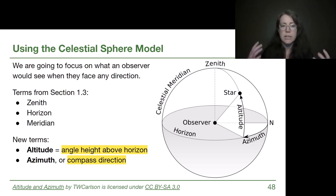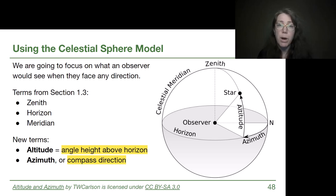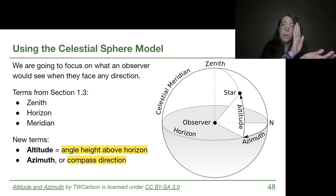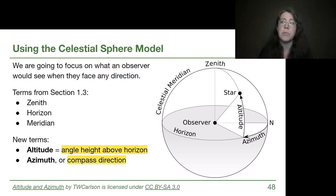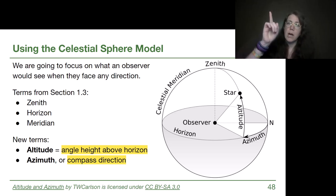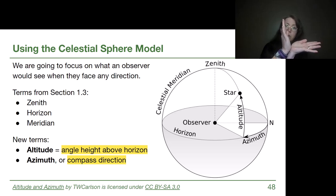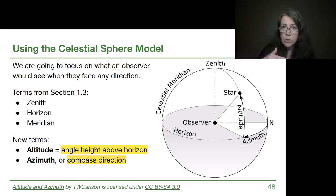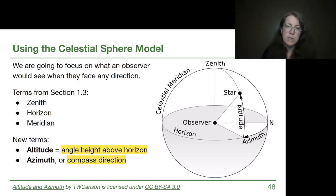The first new term is altitude. The definition of altitude in astronomy has nothing to do with climbing mountains. Instead, altitude is the angle height above the horizon that a particular object is. Zero degrees altitude means something is on the horizon — just visible — so at sunrise the sun has an altitude of zero degrees. Zenith, the point perfectly straight up, is a 90-degree angle from the flat horizon. So altitude can only go from zero degrees up to 90 degrees.